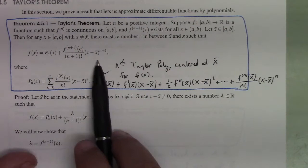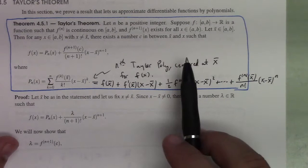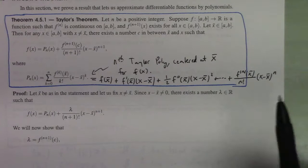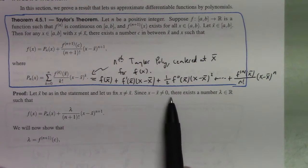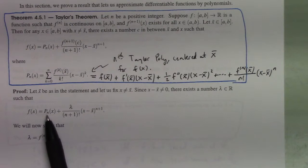It's not that this formula only holds if x is not equal to x-bar — it's just that the theorem is most interesting when x is not equal to x-bar. So: x minus x-bar is non-zero, which means there exists a number lambda in ℝ such that f(x) = p_n(x) + λ/(n+1)! · (x - x-bar)^(n+1).